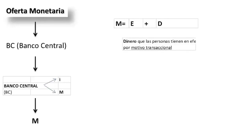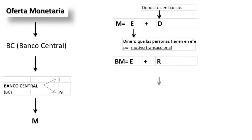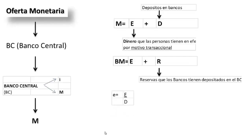La oferta monetaria es la suma de E más D, siendo E la cantidad de dinero que las personas tienen en su poder y D los depósitos en los bancos. Pero el Banco Central controla la base monetaria, que está dada por la suma de E más R, siendo R las reservas que los bancos tienen depositadas en el Banco Central. Los individuos suelen comportarse de manera estable, determinando dos ratios: el primero es efectivo sobre depósitos, y el segundo, que lo determina el Banco Central, es el encaje.